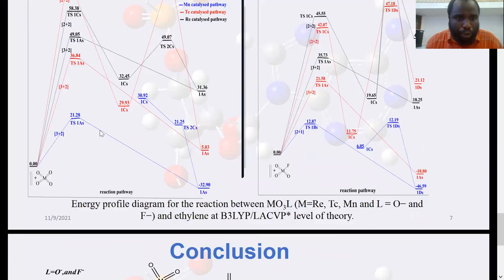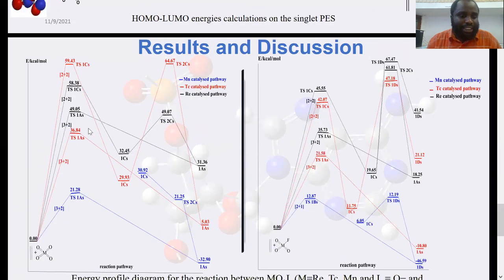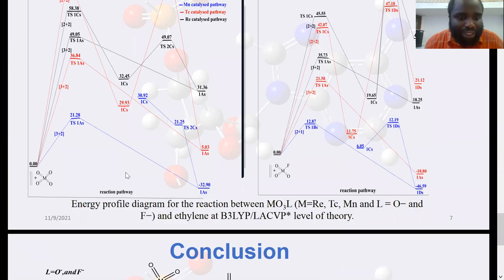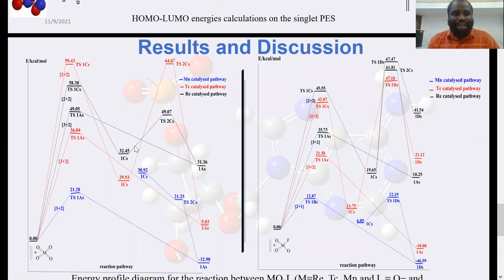However, the formation of epoxides was not possible for the Mn pathway. In the Tc and Re pathways, the formation of epoxides was possible through the 2+2 pathway. This tells us that if you're using permanganate, perrhenate, and pertechnetate complexes, they would exclusively yield diols.